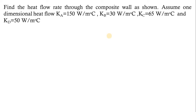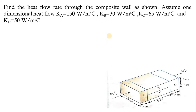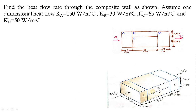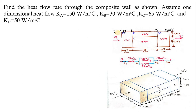Take one more example: find the heat flow rate through the composite wall as shown. The wall is a composite wall; assume one-dimensional heat flow. KA, KB, KC, and KD are given. We need to find the heat flow rate. Converting this diagram into a 2D diagram, we label the temperatures T1, T2, T3, and T4. Using electrical analogy, we draw resistances for each block and compile them.